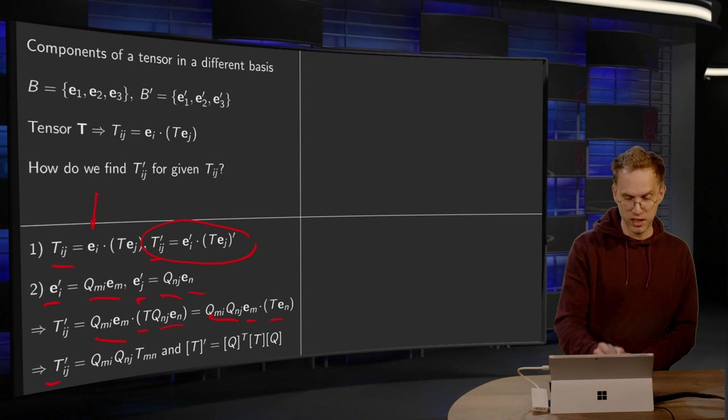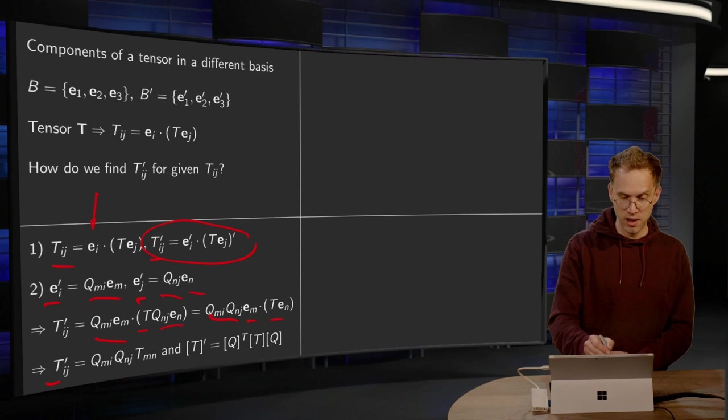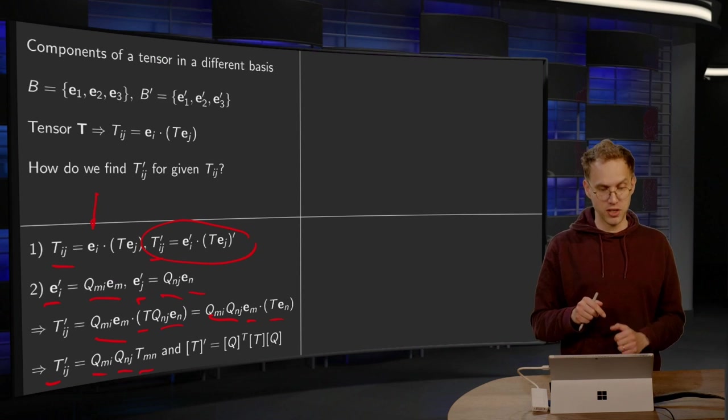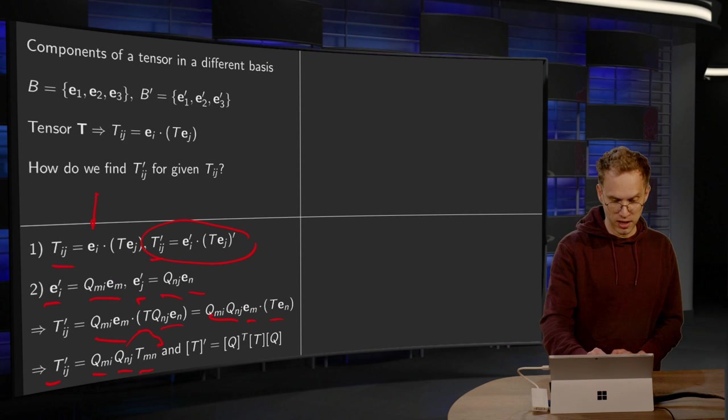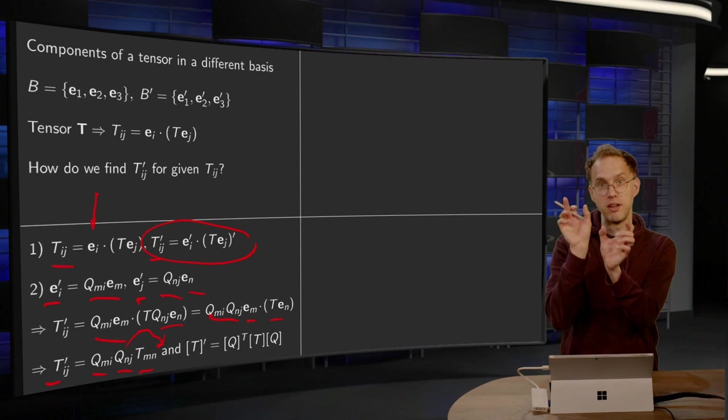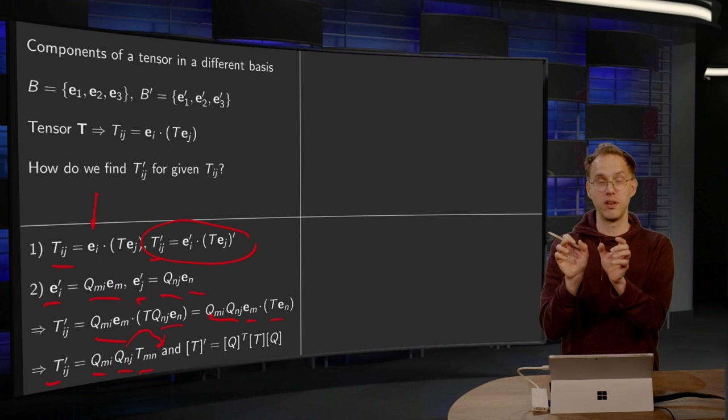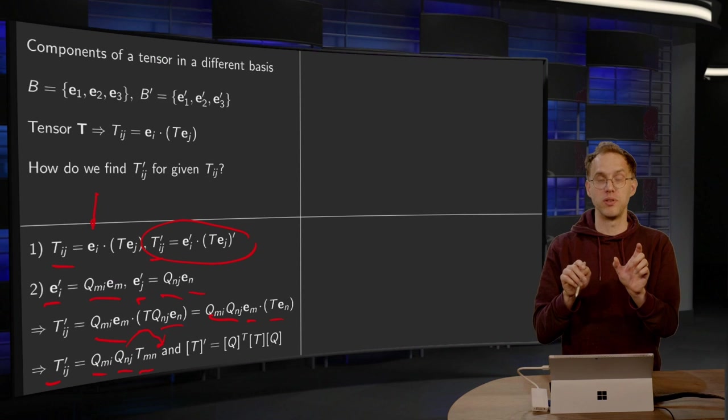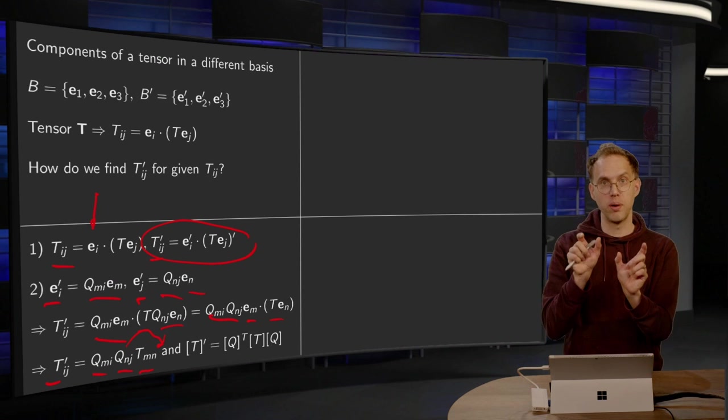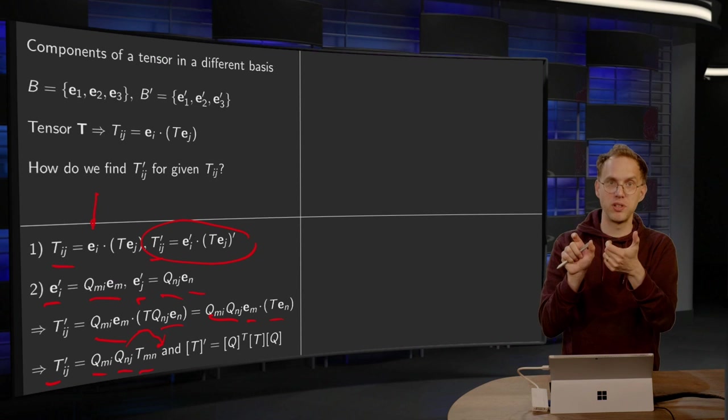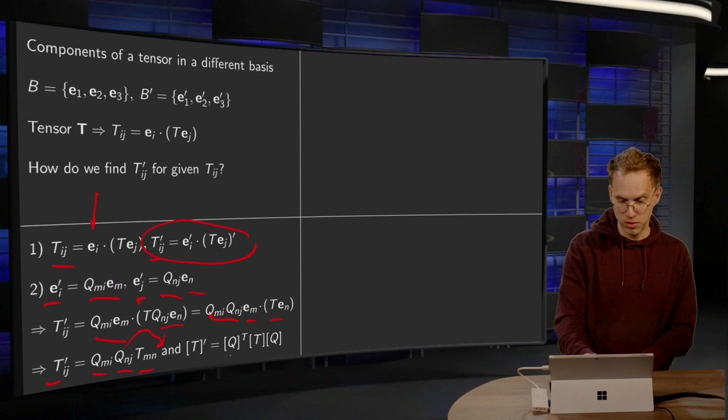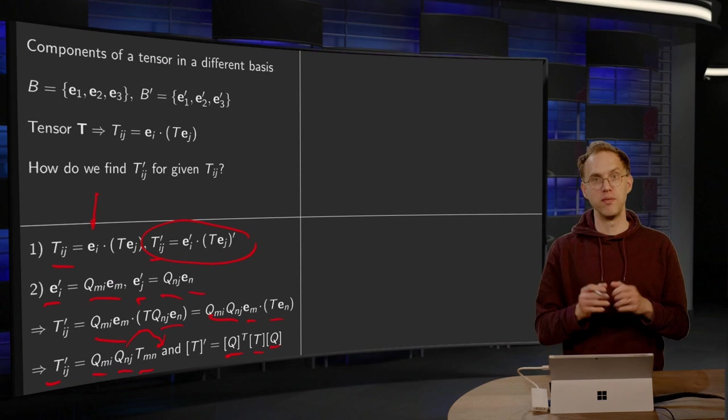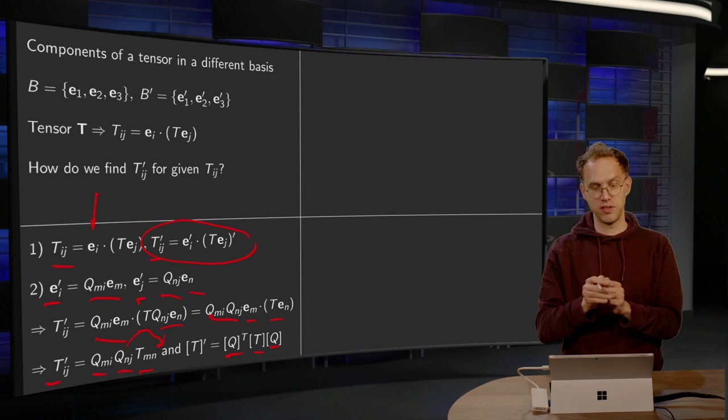So what it says here is T'_ij, the components in the prime basis, is just Q_mi·Q_nj·T_mn, the components in the old basis. And you can write this as a matrix equation. If you put the Q_nj last, then we have T_mn·Q_nj, which is in matrix language T times Q. And then we are left with Q_mi. The m is on the wrong side, so we have to take the transpose in order to get Q_mi·T_mn. So we need Q transpose times T times Q. So the matrix of T in the prime basis is given by matrix of Q transpose times matrix of T times matrix of Q.